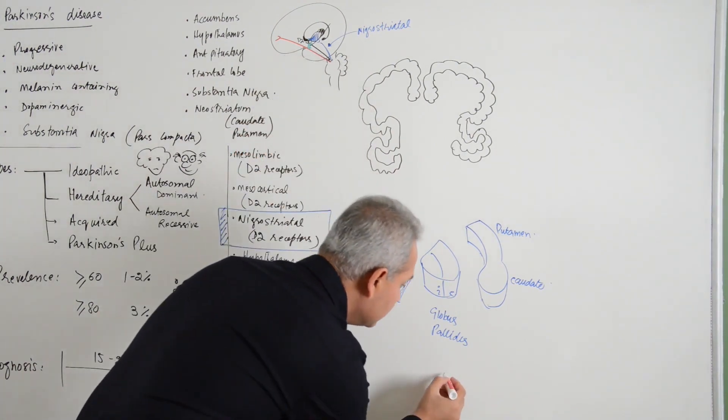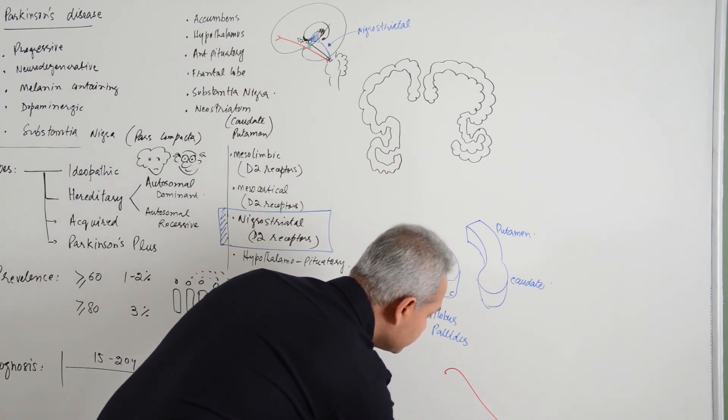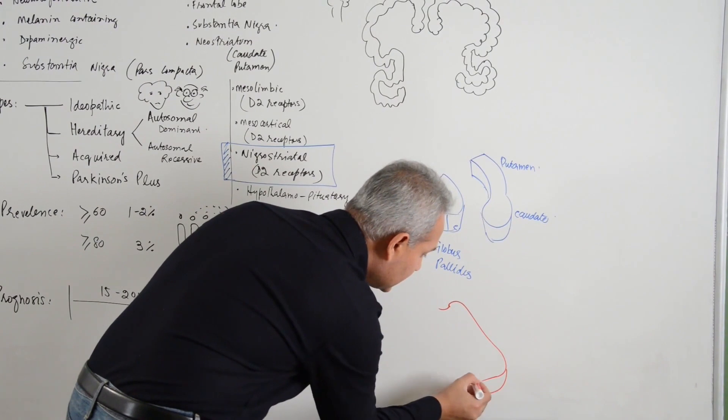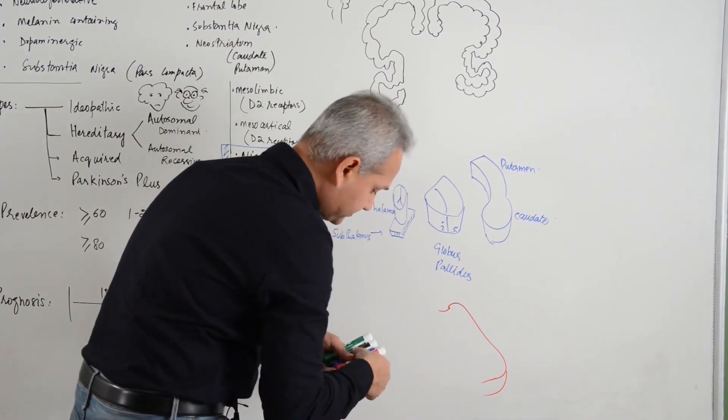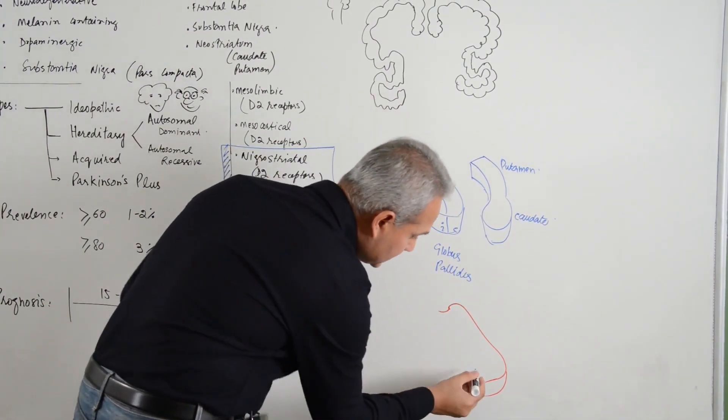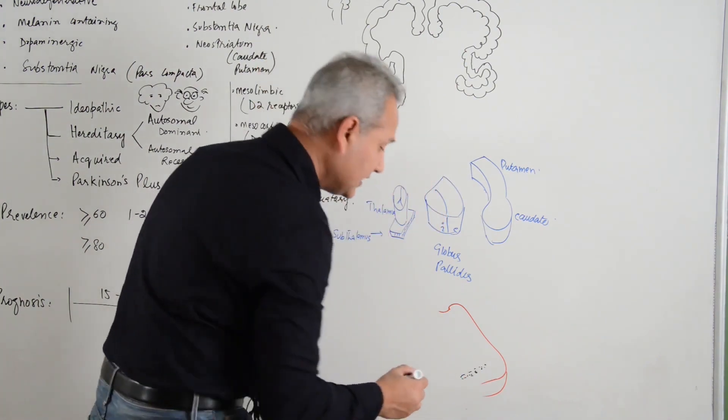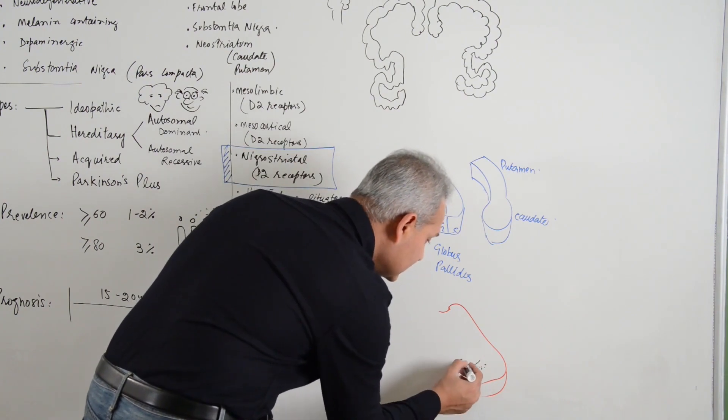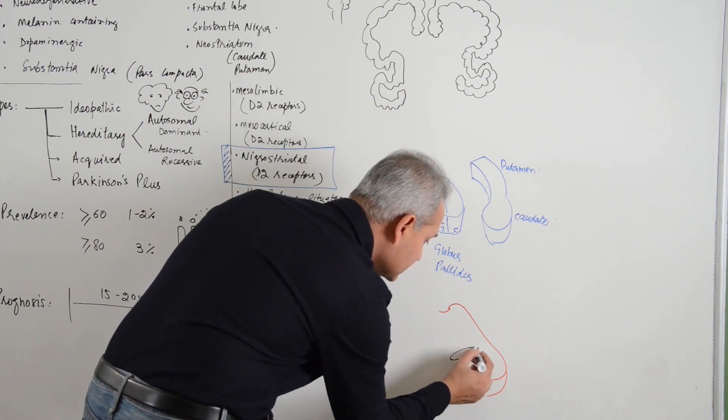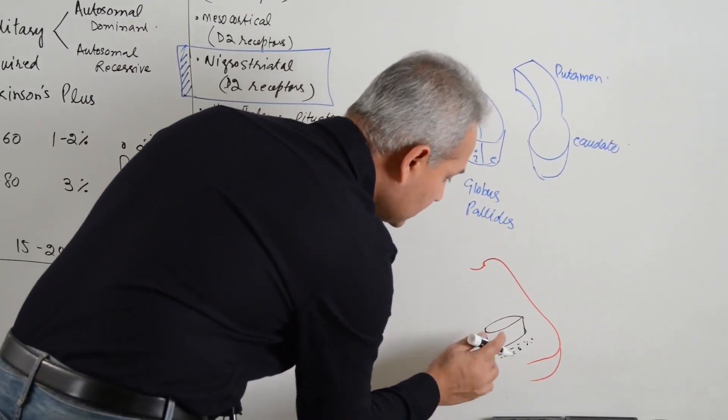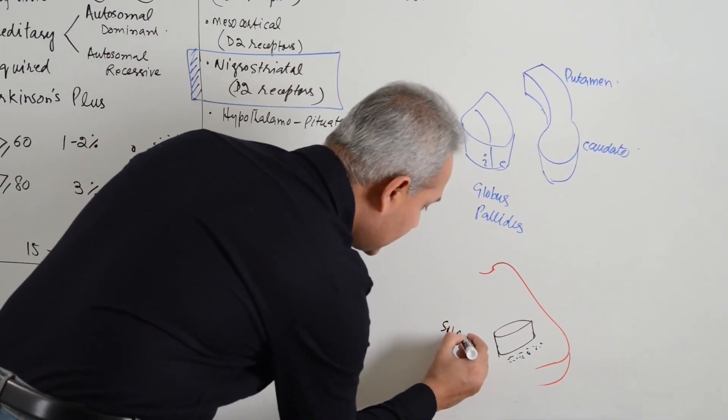Let us say the midbrain is here. This is the superior colliculus, midbrain. This is the substantia nigra pars reticularis and then behind that is the substantia nigra pars compacta. Let us say this is the pars compacta.